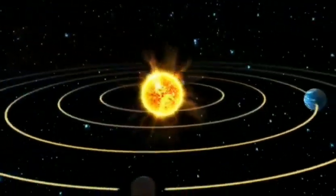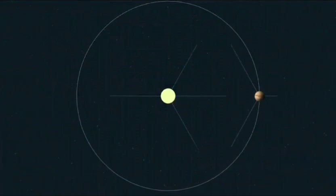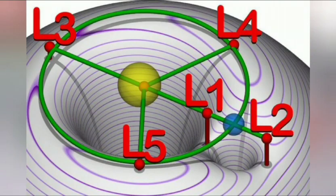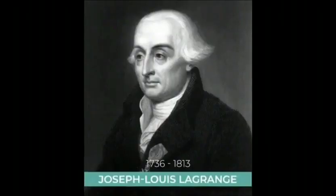Lagrange points are specific points in space where the gravitational forces of two large bodies, such as the Earth and the Moon or the Earth and the Sun, produce enhanced regions of attraction and repulsion. These points were discovered by Italian-French mathematician Joseph Louis Lagrange in 1772.